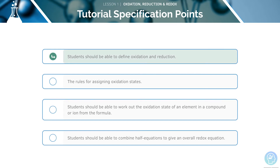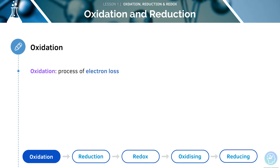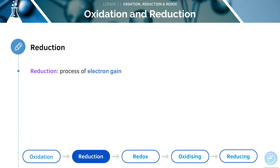First, we will cover the terms oxidation and reduction. Here are some key terms we will cover in today's lesson: oxidation and reduction, then redox, oxidising and reducing. An oxidation reaction is the process of electron loss, and oxidising agents are electron acceptors. A reduction reaction is the process of electron gain, and reducing agents are electron donors.